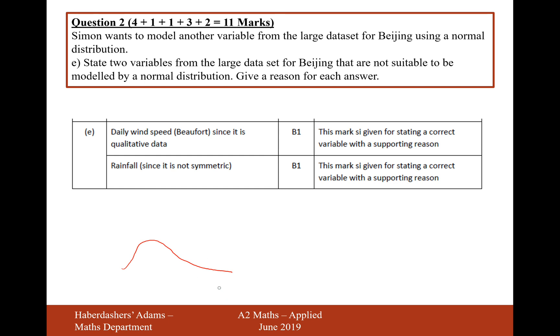So because that's skewed data and we want the normal distribution to be symmetric data, those are the two reasons for those two different variables there. And there we are, that's our answer for question 2 in total, that's 11 marks.